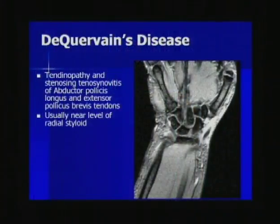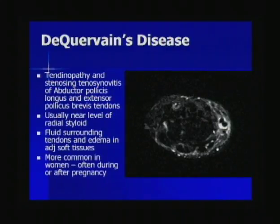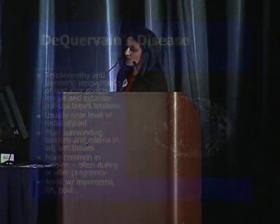Finally, de Quervain's disease is tendinopathy and stenosing tenosynovitis of the abductor pollicis longus and extensor pollicis brevis tendons, usually occurring near the level of the radial styloid. It is diagnosed by seeing fluid surrounding both tendons as well as edema in the adjacent soft tissues; oftentimes the tendons themselves have normal signal and appearance. It's more common in women and is often seen during or after pregnancy, but can also be associated with mixed edema, rheumatoid arthritis, and gout.